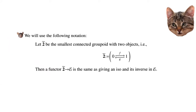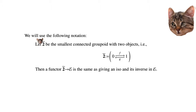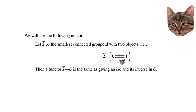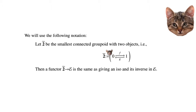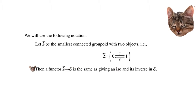We use the following notation: let 2̃ be the smallest connected groupoid with two objects — that is, two distinct objects and two non-identity morphisms which are inverse to each other. Then a functor from 2̃ to E is the same thing as giving an isomorphism and its inverse in E.